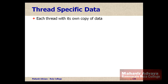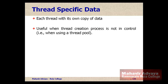Each thread has its own copy of data, which is useful when thread creation is not directly controlled, such as when using a thread pool. Thread-specific data includes items like the thread ID, the stack used by the thread, the registers used, and the data associated with that particular thread.